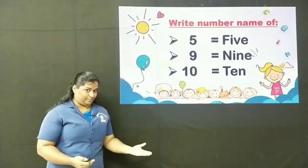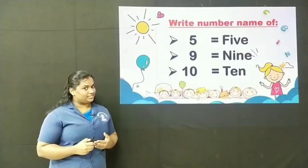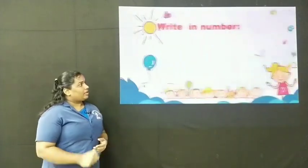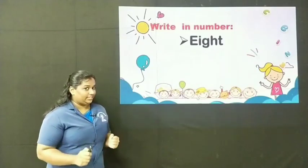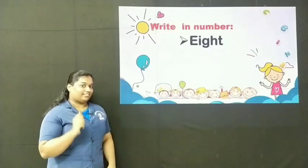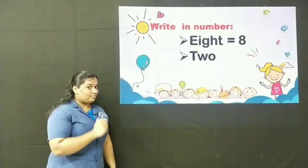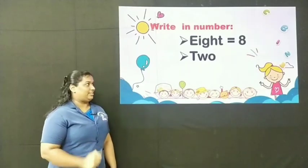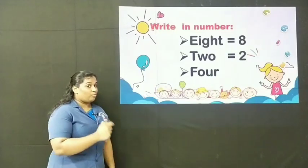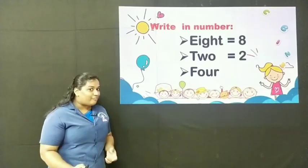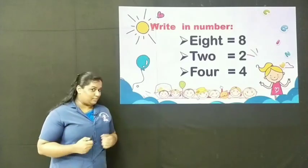Now, if I give the number name, are you able to write the number for those names? Let's try. How do you write E-I-G-H-T in number? Correct. It is 8. Then T-W-O. Very good. It is 2. What about F-O-U-R? 4. Very good. So you know to write the number name and numbers.